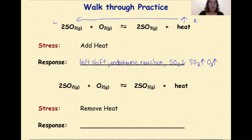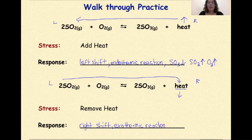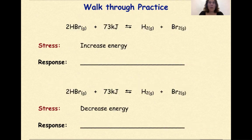Let's look at another example. This is my left and this is my right. This time the stress is the removal of heat — heat is still on the product side. We're going to remove it, so now we need to shift our point of equilibrium to replace the heat that was lost. The reactants are going to come together to form more products and as a result replace the heat that was lost. The response here is a right shift. Heat is lost, so this is an exothermic reaction. The amount of SO3 will increase, SO2 will decrease, and the amount of O2 will also decrease.